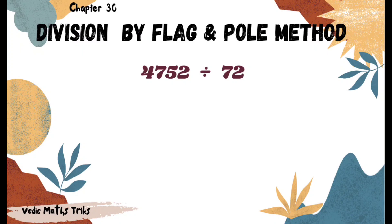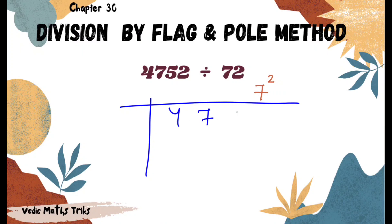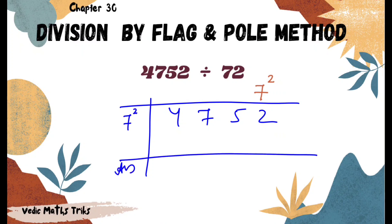Let's take one more example: 4752 divided by 72. We write 7 as the pole and 2 as the flag. We arrange the digits — 4752 — and divide by 7 with flag 2. Since there is one digit in the flag, we leave one digit from the right and put a partition; this part will be our remainder part.